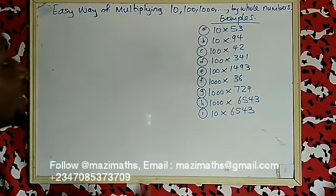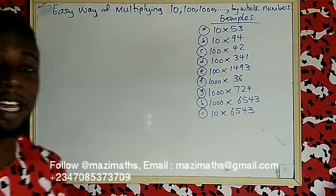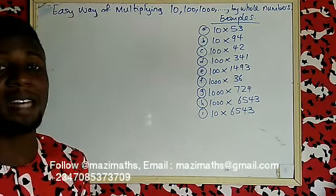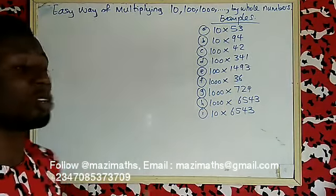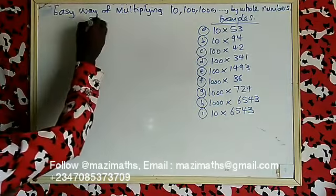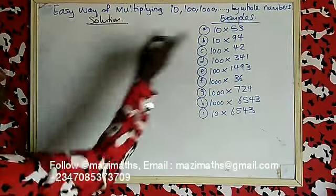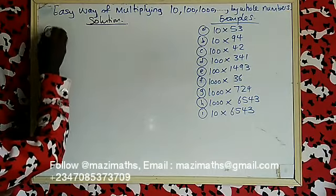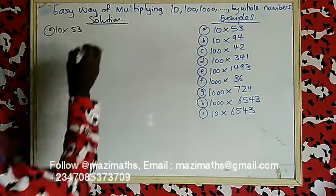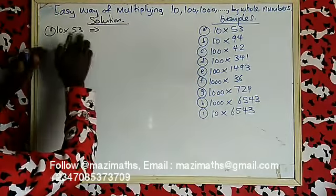For example, the first sample: 10 times 53. When you are writing the exam and you want to multiply quickly, this is a short way of getting your answer. For the first solution, you have 10 times 53, so write 53 first.